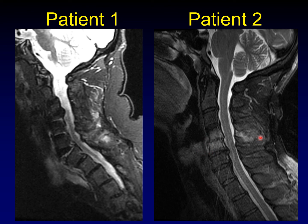This infection looks a lot alike — abnormal signal in front, abnormal signal in the interspinous region — but here the effect on the disc is very different. Here we have disc collapse, and of course the enhanced images that I withheld.